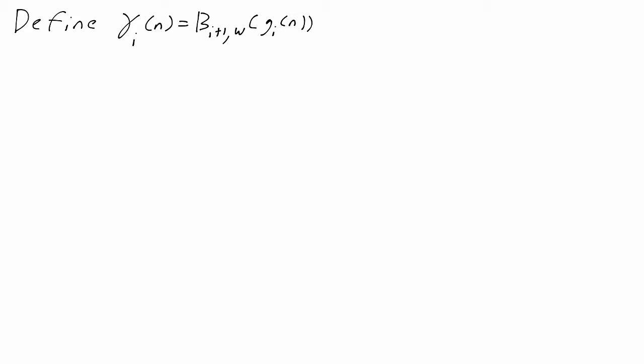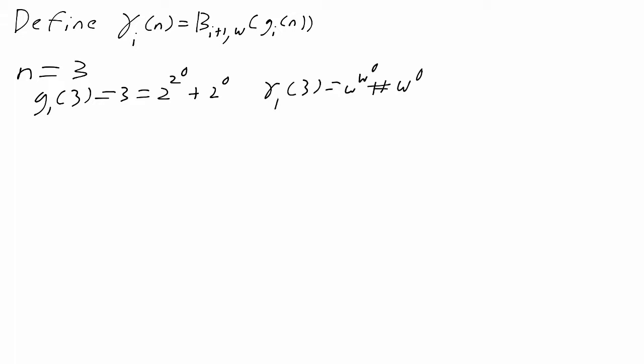Even though g_i(n) might keep increasing for a long time, the ordinals gamma_i(n) will always decrease. Let's try this out with a simple example. When we start with 3, g_1(3) is 3, and in hereditary base 2 notation that's 2 + 1, so gamma_1(3) is omega + 1. Then g_2(3) is 3 + 1 - 1, so 3. So gamma_2(3) is omega. Notice that even though the Goodstein sequence stayed the same, the ordinal decreased.